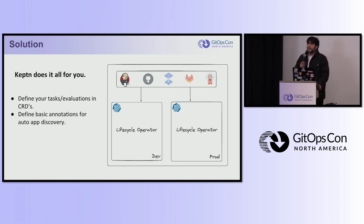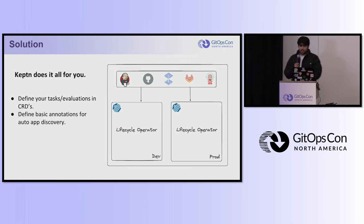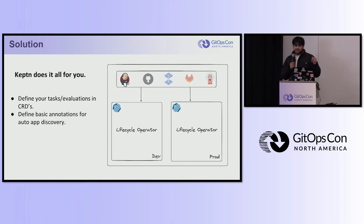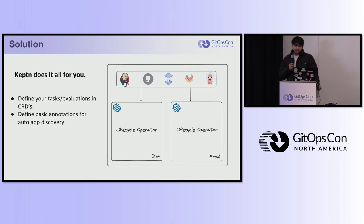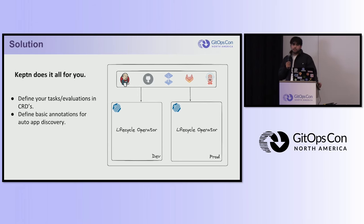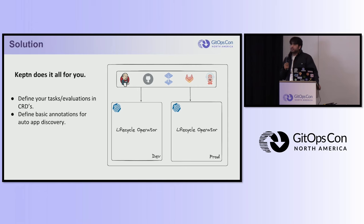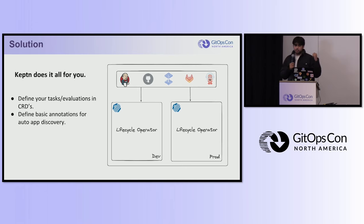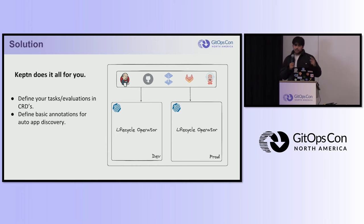Keptn basically has two operators: the lifecycle operator and the metrics operator. The metrics operator works for fetching metrics from your observability provider, and the lifecycle operator manages the application deployment lifecycle — from pre-deployment checks to post-deployment evaluation tasks, promotion tasks, and everything in between.